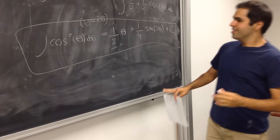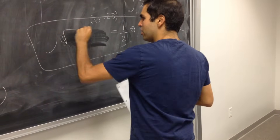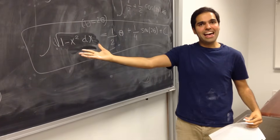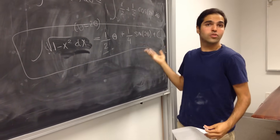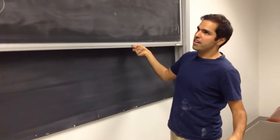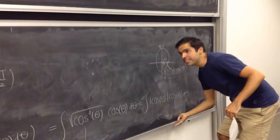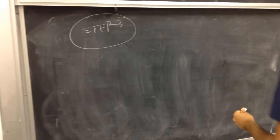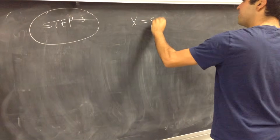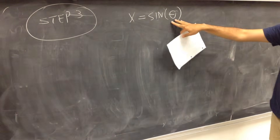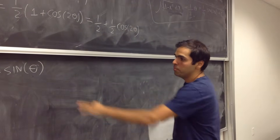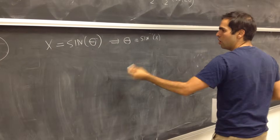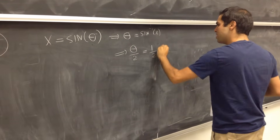So the integral of square root of 1 minus x squared dx equals one half theta plus one quarter sine of 2 theta plus C. But of course the left-hand side depends on x, so we want to write the right-hand side also in terms of x. For this we work backwards using what's called the triangle method. Since x equals sine of theta, theta is arc sine of x, and so theta over 2 is one half arc sine of x. That takes care of the first half of the integral.